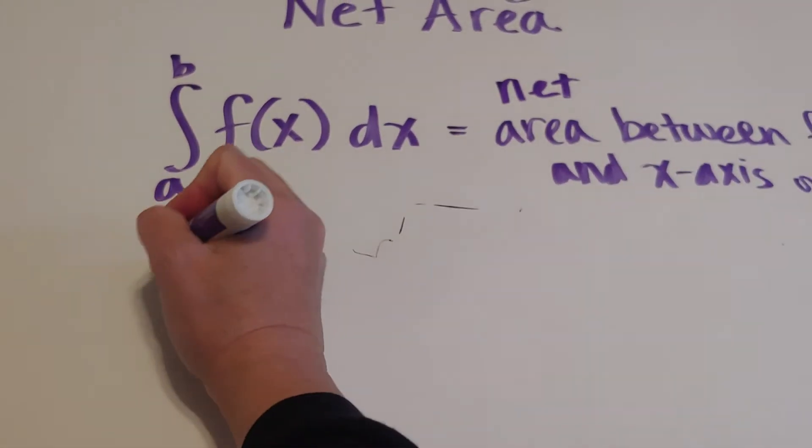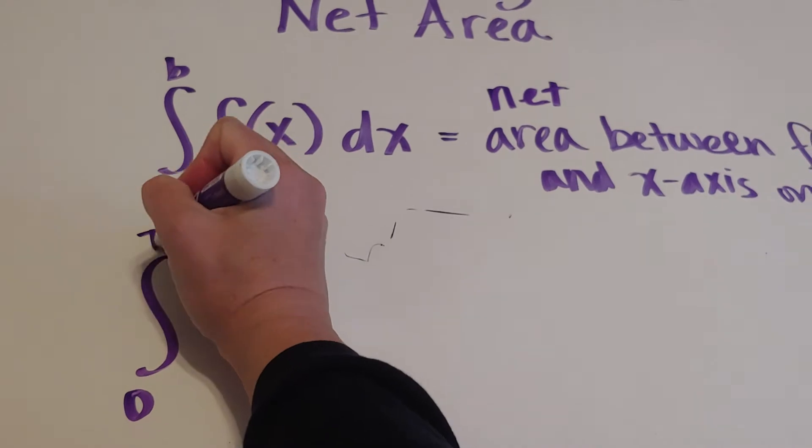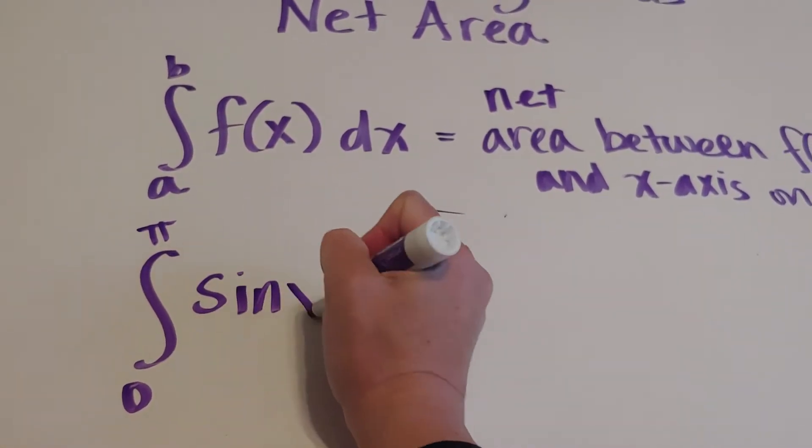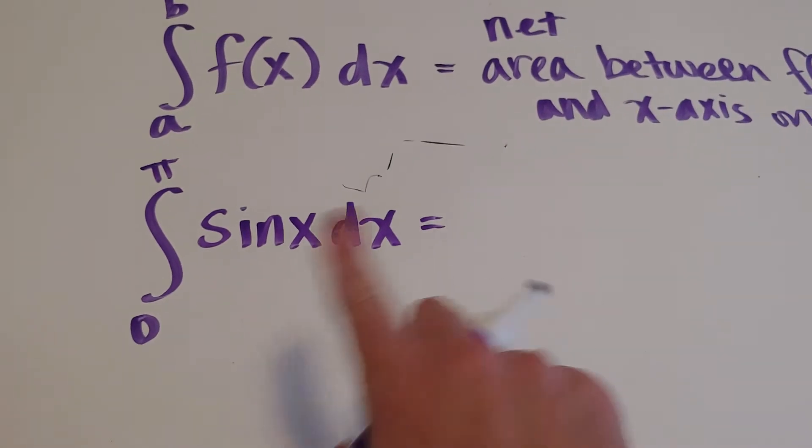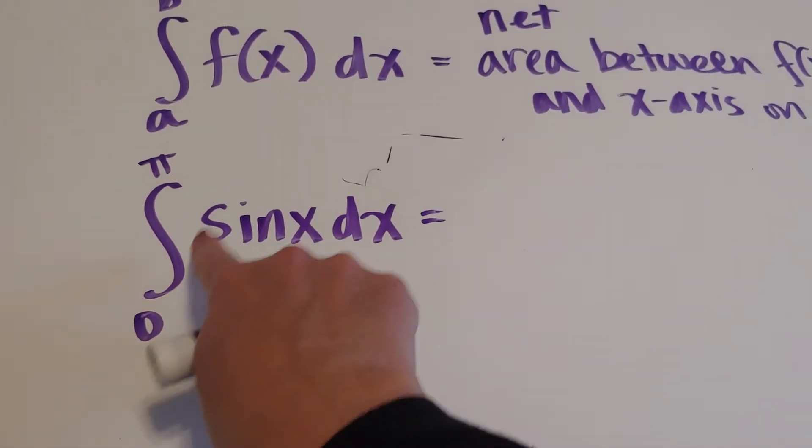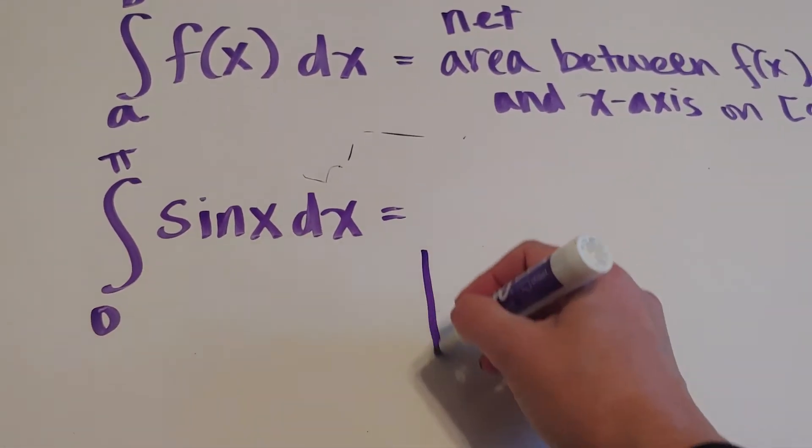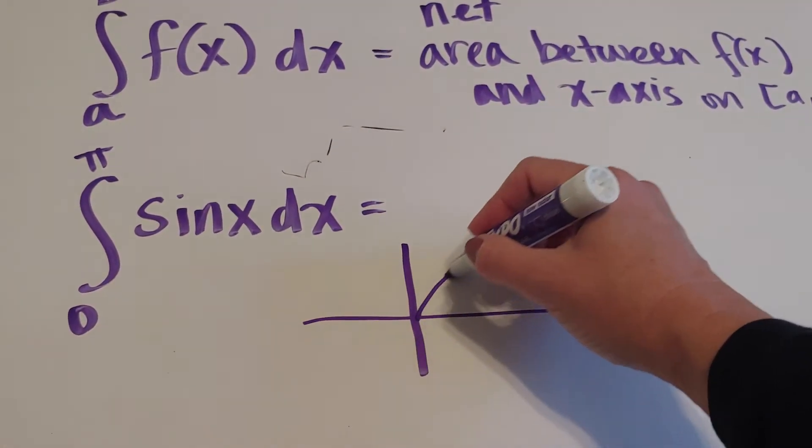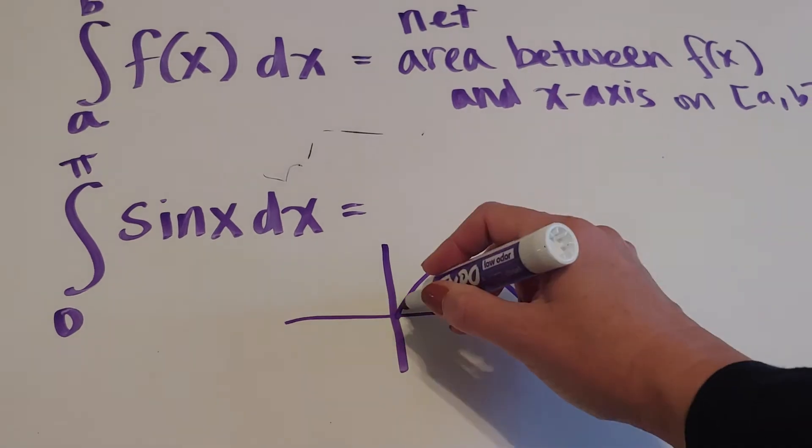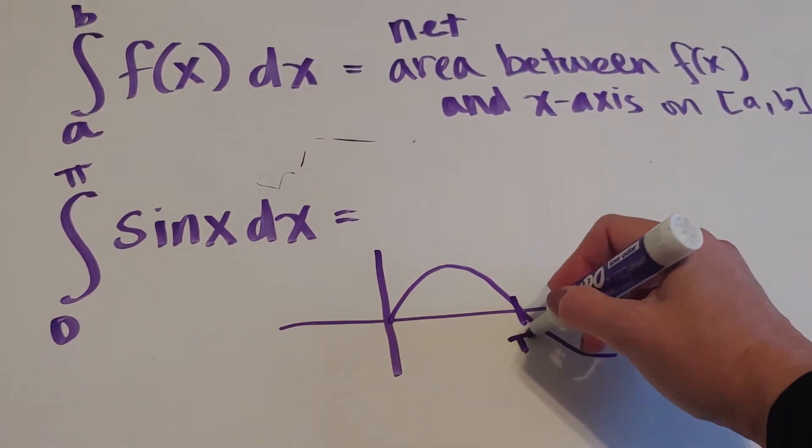For example, if we wanted to find the integral from 0 to π of sin x dx, and we were just curious whether this was positive, negative, or 0. If I graph this, this is saying that I would take the sine function from 0 to π, so the sine function goes like this, but from 0 to π, I only care about it to there.